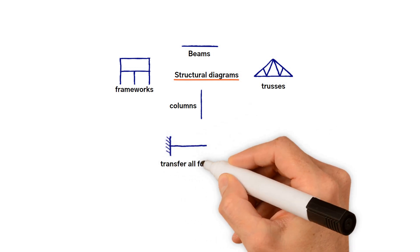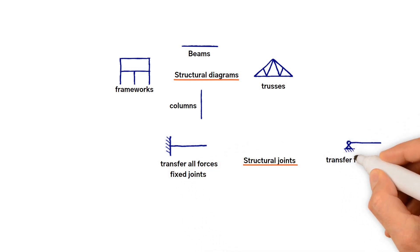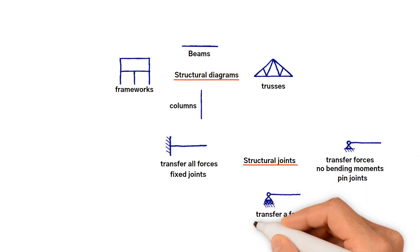Joints that can transfer all forces are called fixed joints. Joints that transfer forces but no bending moments are called pin joints. And joints that only transfer a force in a specific direction are called sliding joints.